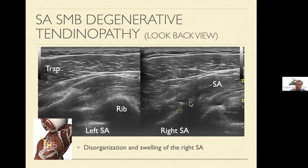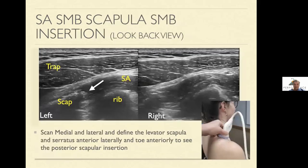This is surprisingly more common than people think — in my clinical practice seeing people from all over the country for scapular dyskinesis and chronic scapular pain, more often than not it's the serratus anterior that's the culprit, not the levator scap. We're all focused on the levator scap, but in reality, more often than not it's the serratus anterior. Here's another example of a small bony avulsion off the serratus anterior from repetitive overuse — they just pulled a piece of bone off. The look-back technique for viewing this area is an important acquired skill.